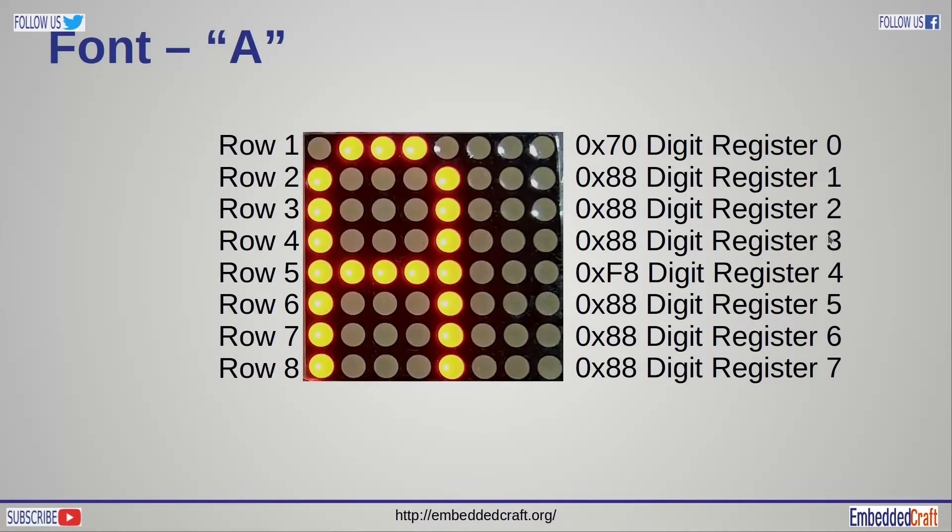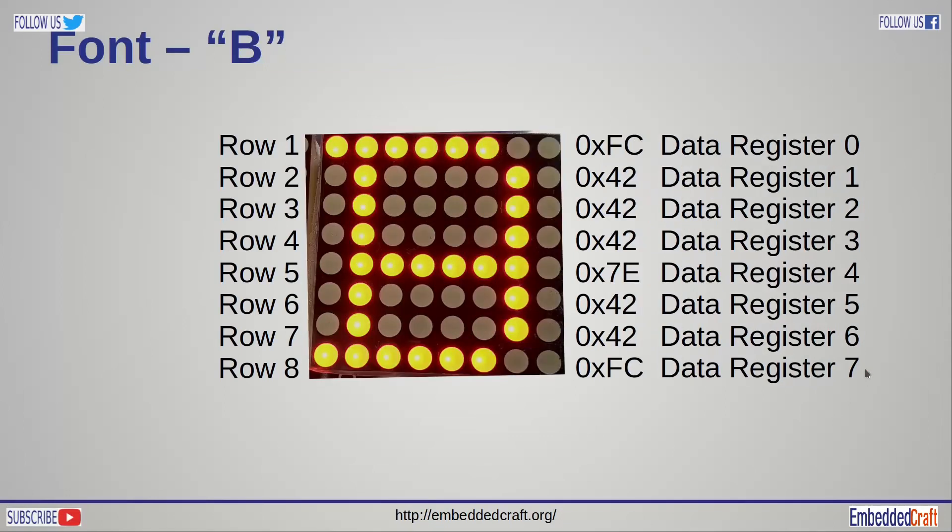If we want to display character A on LED display, we need to write 70 into digit register 0, 88 into digit register 1 and so on. In this way we can create fonts. Same way we will be able to write character B. We need to write FC into data register 0, 0x42 into data register 1 and so on. We have figured out values need to be written in data register.